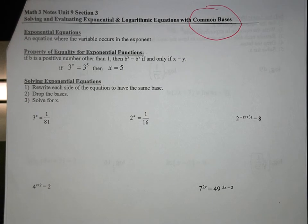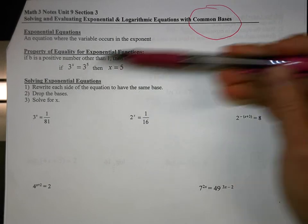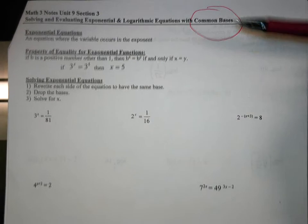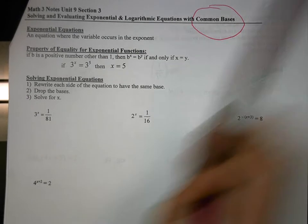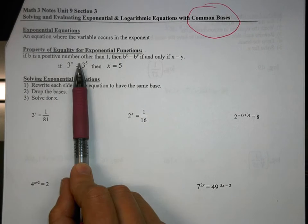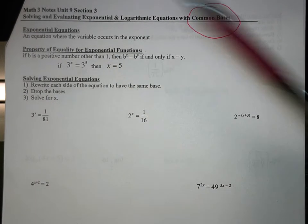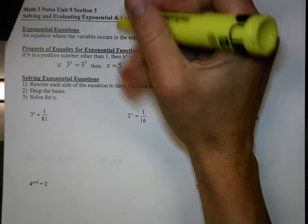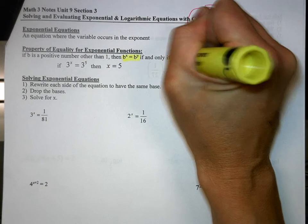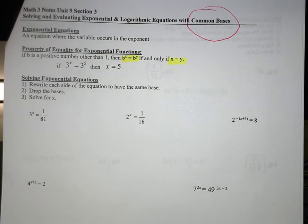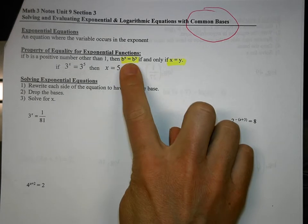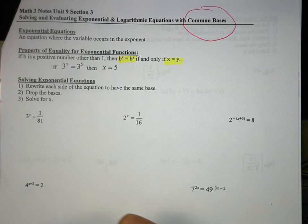There's going to be a point when we don't have common bases, so this is going to be fun. So this first part we have our exponential equations, and we need to solve for the variable. It says if B is a positive number other than 1, then B to the X equals B to the Y, if and only if X equals Y. So what it's saying is, if each side of your equation has the same exact base, then you can drop the bases, and your answer is the exponents.